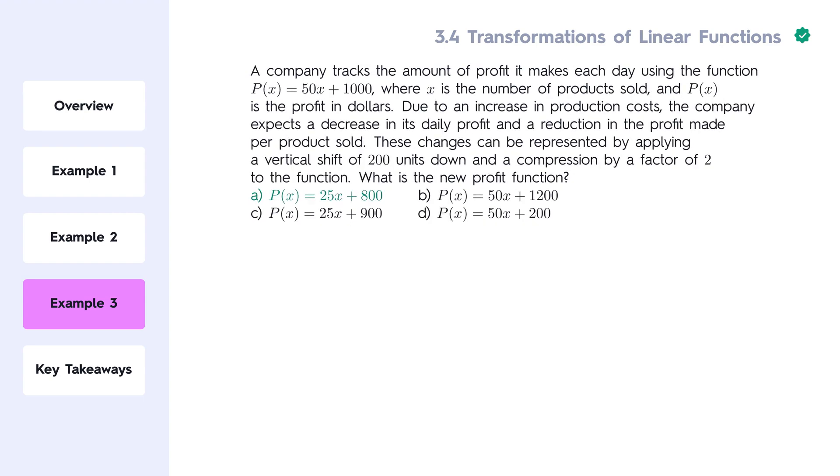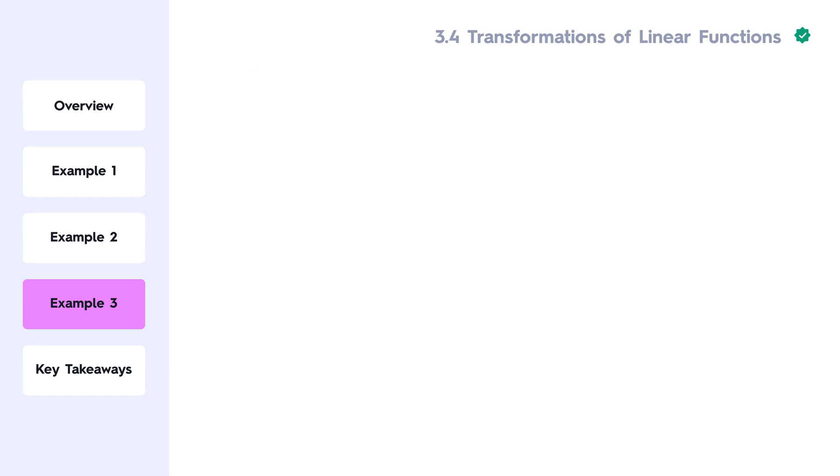The new profit function is p of x equals 25x plus 800, which corresponds to answer choice A. Great work! You've successfully applied both a vertical shift and a compression to a real-world problem, just like you might see on your test.